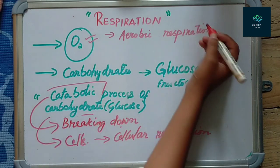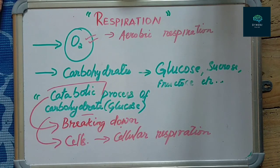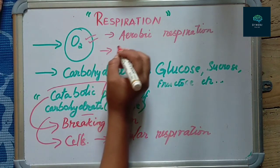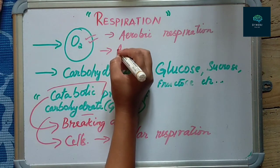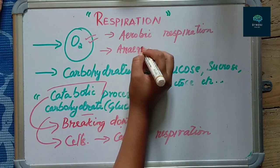In some organisms, respiration occurs in the absence of oxygen. When it involves oxygen it is aerobic; when cells carry out respiration without oxygen, it is called anaerobic respiration.